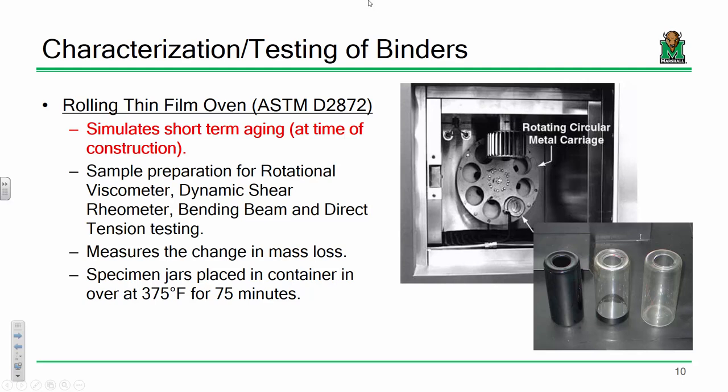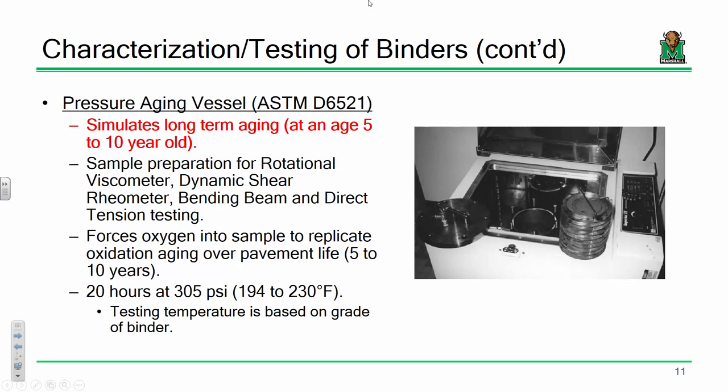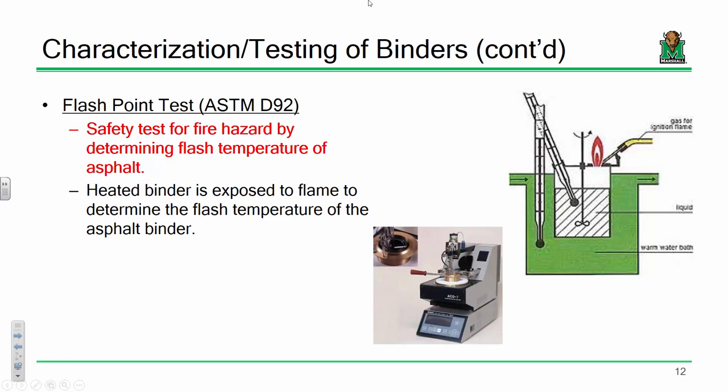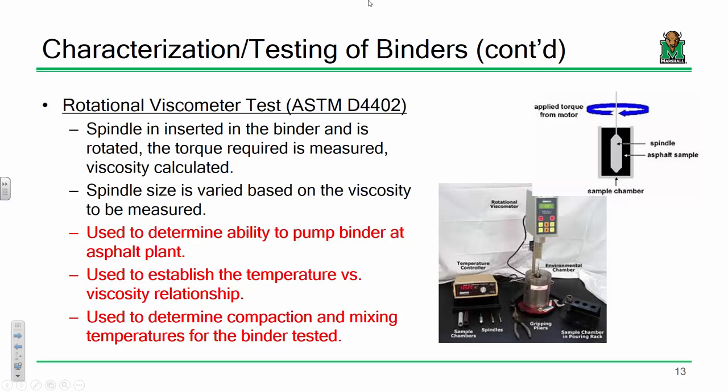For the pressure aging vessel — long-term aging — you have discs of asphalt placed under pressure for about 20 hours at something like 200°F. The testing temperature depends on the grade of asphalt. We're forcing oxygen into the sample to simulate long-term behavior of five to ten years. The flashpoint test is a safety test — you're literally taking a sample of asphalt, setting a flame to it, and seeing the temperature at which that asphalt binder can catch fire. A rotational viscometer test uses a specialized spindle rotated in a binder sample — essentially a super fancy drill bit.